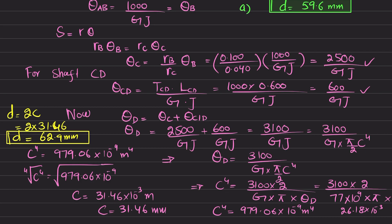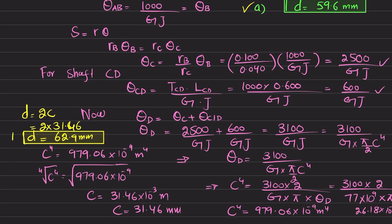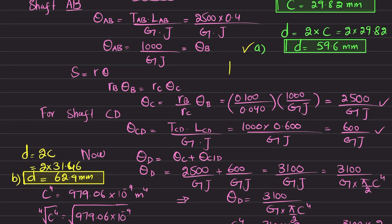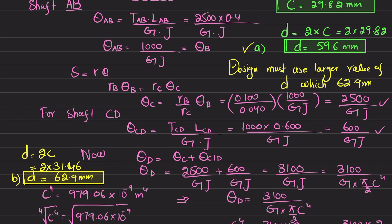We now have two candidate diameters: 59.6 mm based on allowable shear stress and 62.9 mm based on maximum rotation angle. For design safety, we must use the larger value, so the required shaft diameter is 62.9 mm.